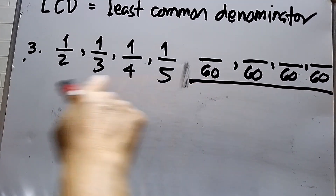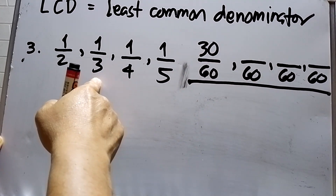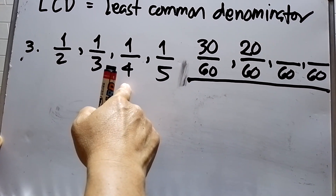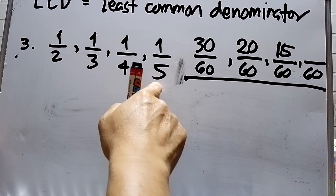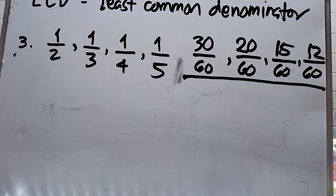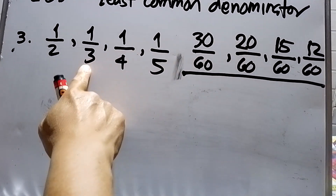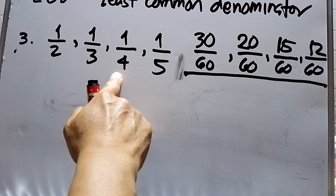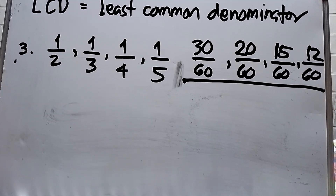So the LCD is 60 for all four fractions. 60 divided by 2 is 30, times 1 is 30. 60 divided by 3 is 20, times 1 is 20. 60 divided by 4 is 15, times 1 is 15. 60 divided by 5 is 12, times 1 is 12. So the similar fractions are 30 over 60, 20 over 60, 15 over 60, and 12 over 60.